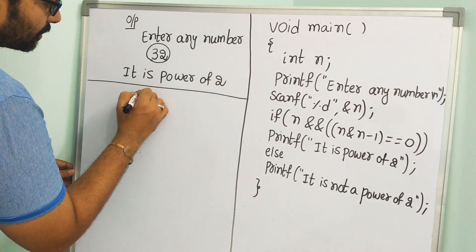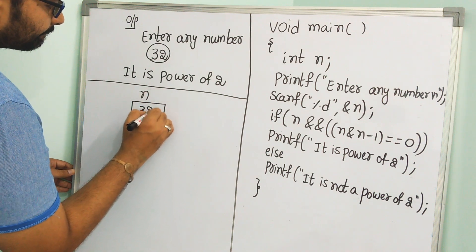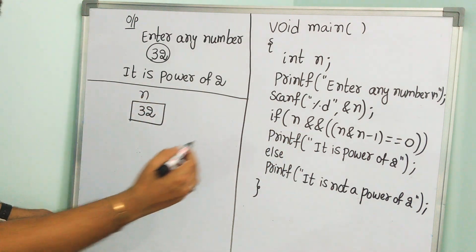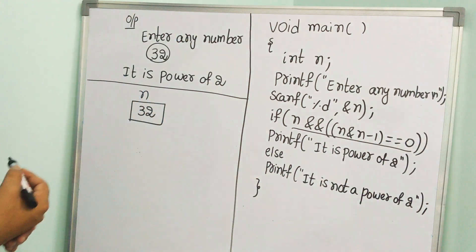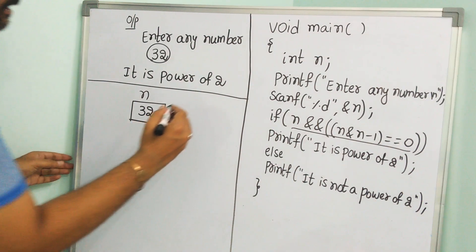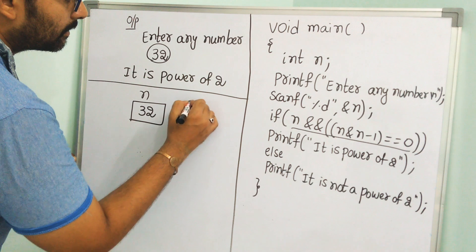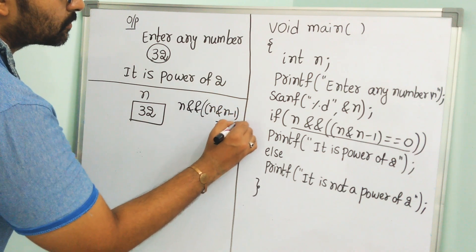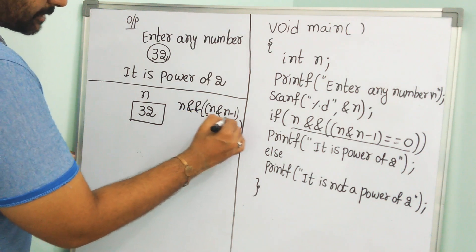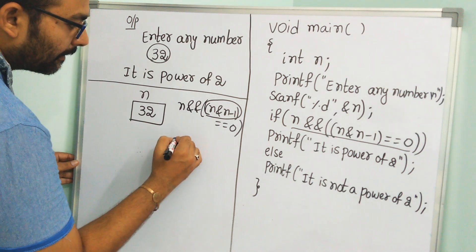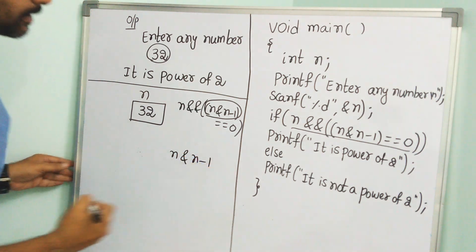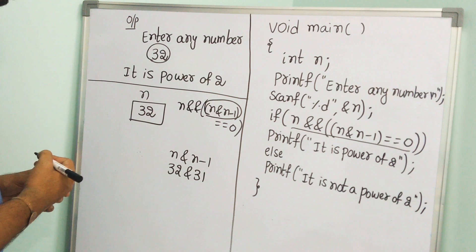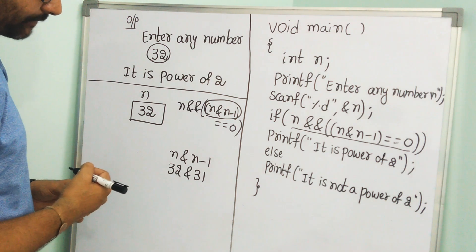The number 32 is placed inside a variable called n. Now look at the conditional expression — n logical AND (n & (n-1)) equal to 0. We first consider the expression n & (n-1), which is 32 & 31. The & operator here is the bitwise AND operator.